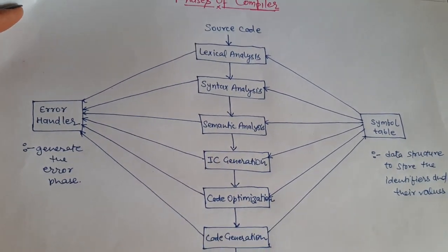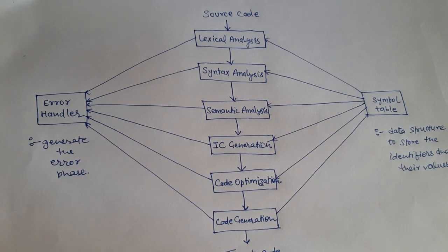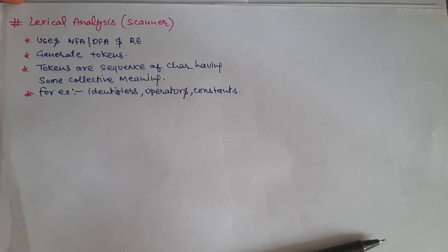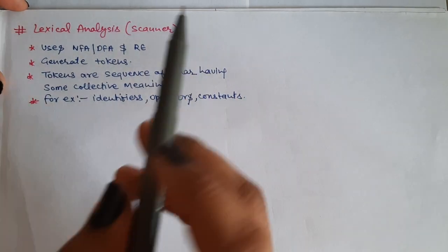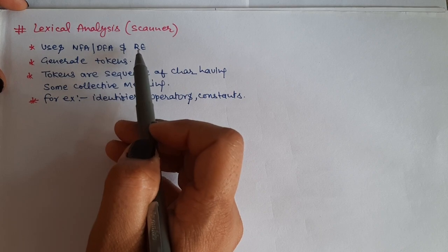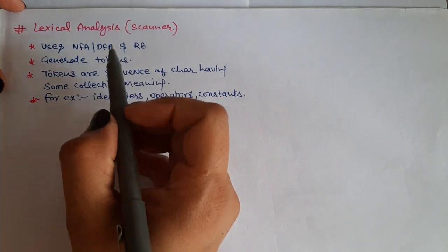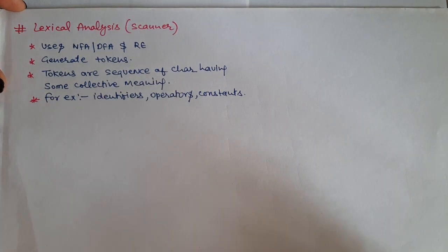Now let's see which phase is working on each phase. First of all, lexical analysis. In the lexical analysis phase, it is also called the scanner. It uses NFA, DFA and regular expressions. What is the main purpose of the scanner? It generates the tokens. It generates the source code and converts it to the tokens.